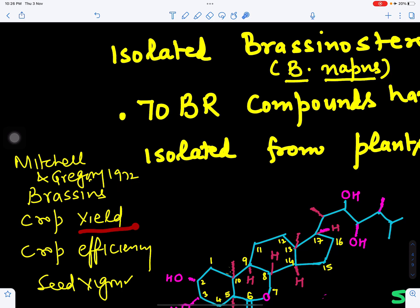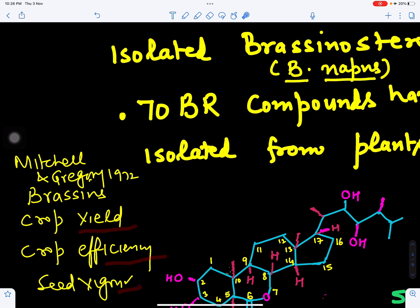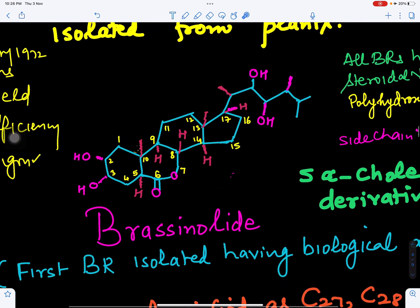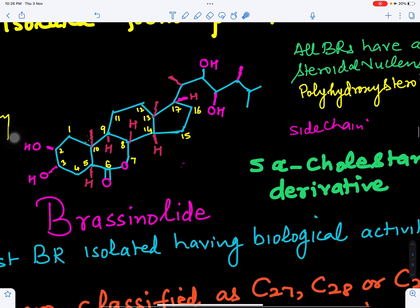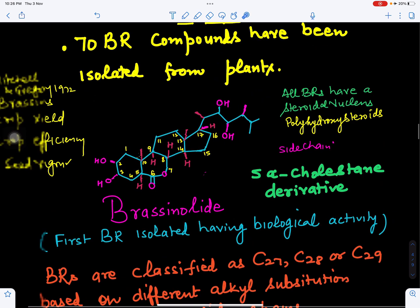Mitchell and Gregory in 1972 also found that brassins or brassinosteroids are highly effective in improving crop yield, crop efficiency, and seed vigor of plants. This is how brassinosteroids were discovered and named.